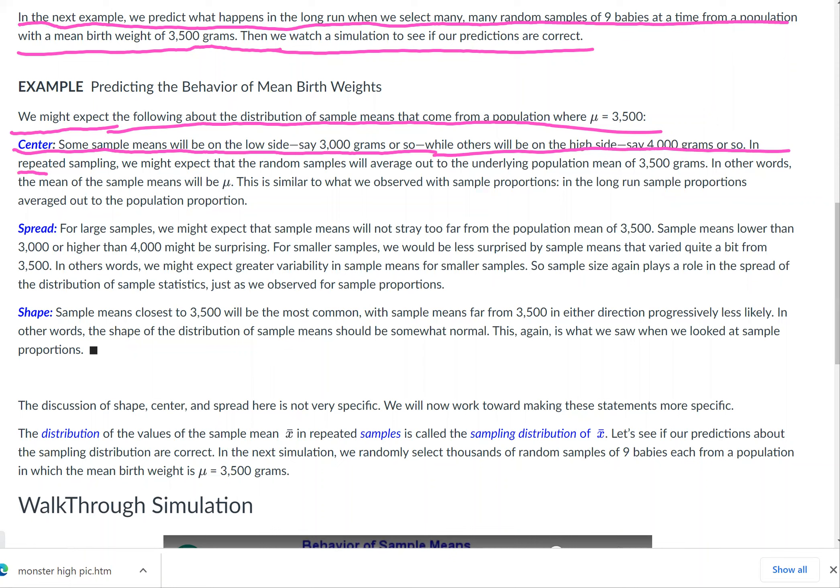In repeated sampling, we might expect that the random samples will average out to the underlying population mean of 3,500 grams. In other words, the mean of the sample means will be μ. This is similar to what we observed with sample proportions: in the long run, sample proportions averaged out to the population proportion.